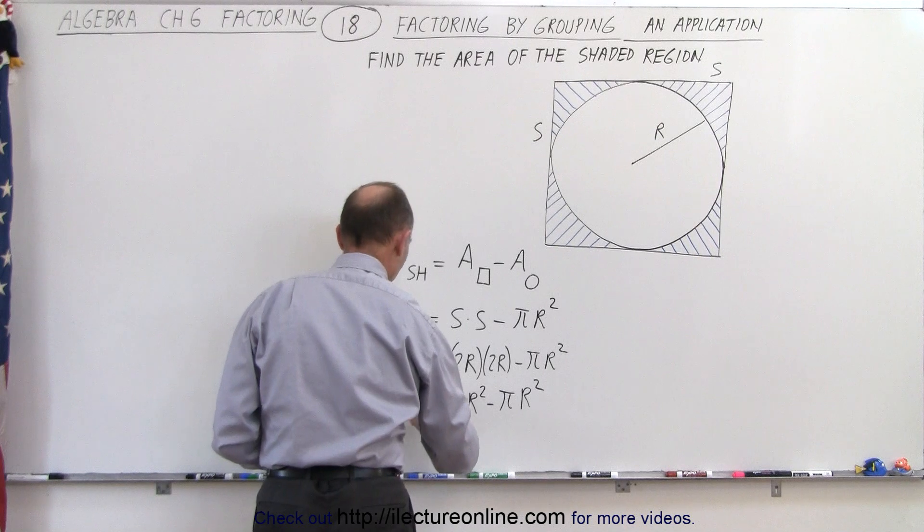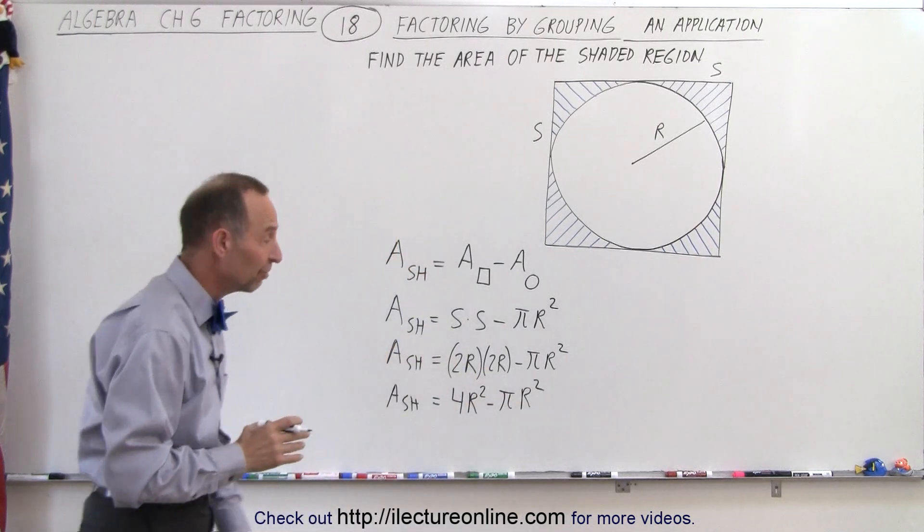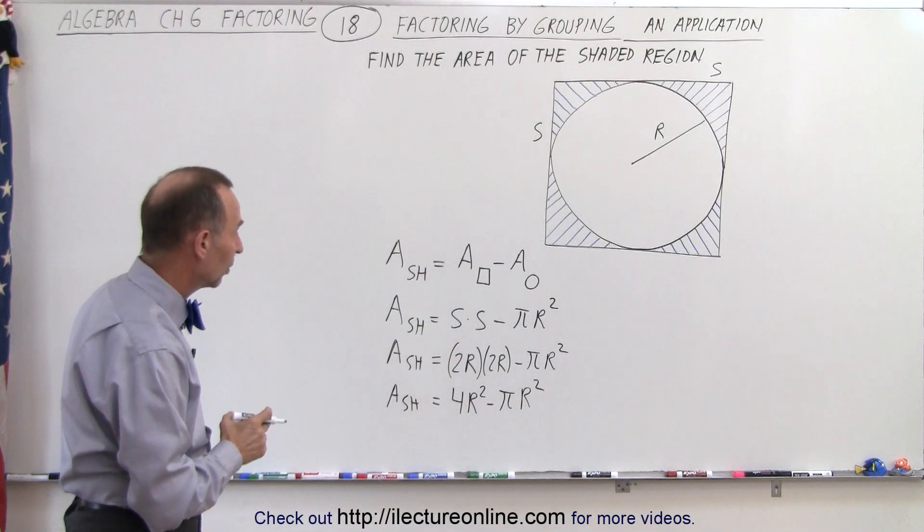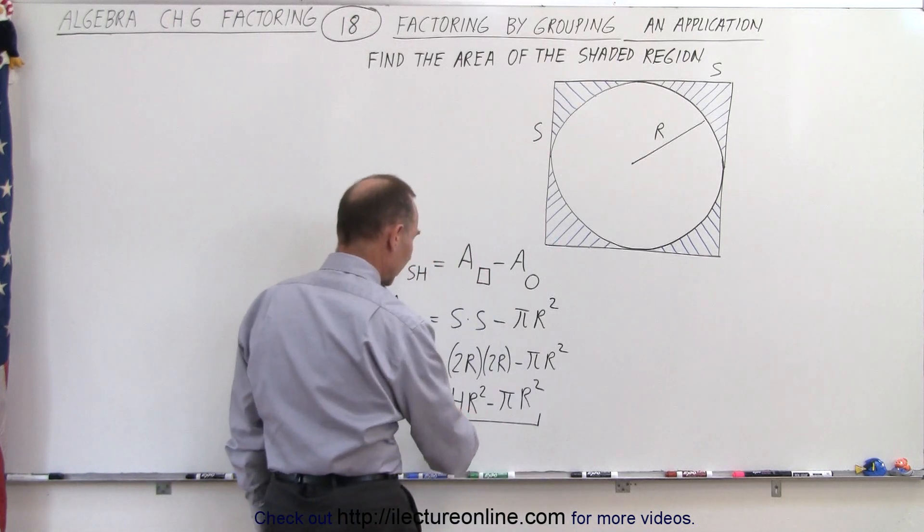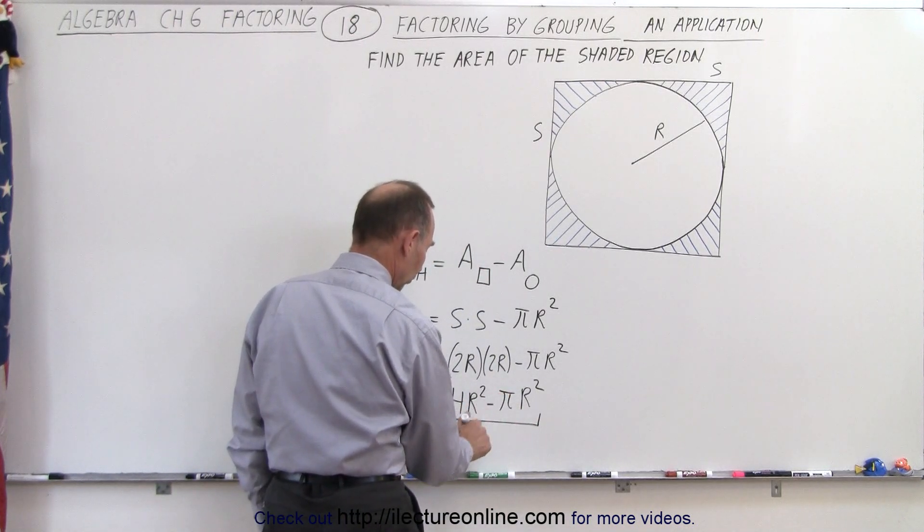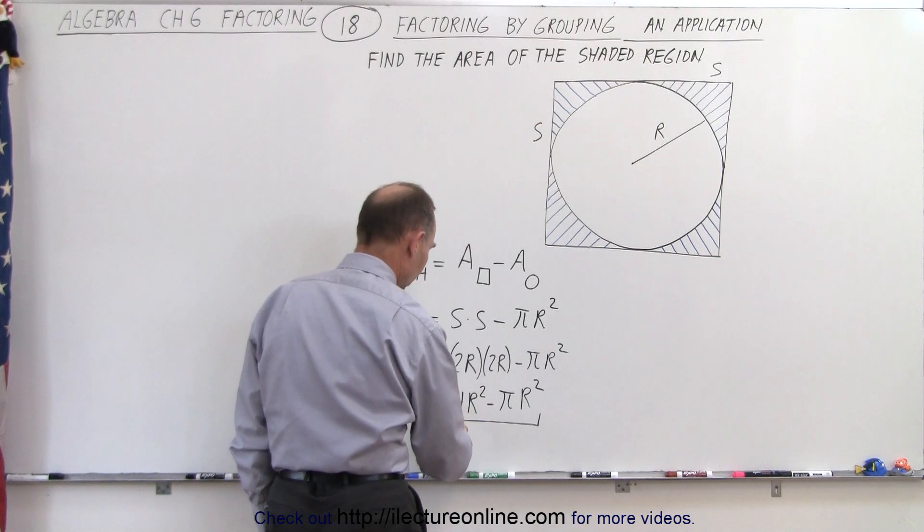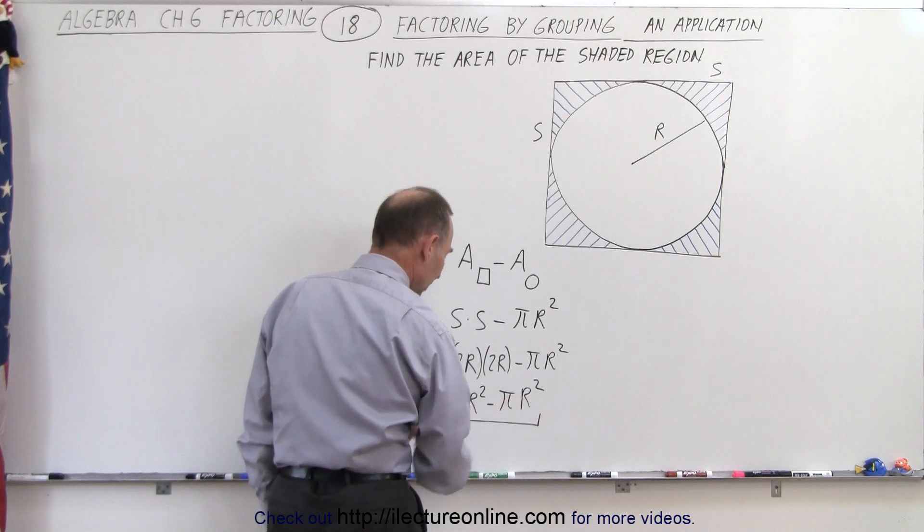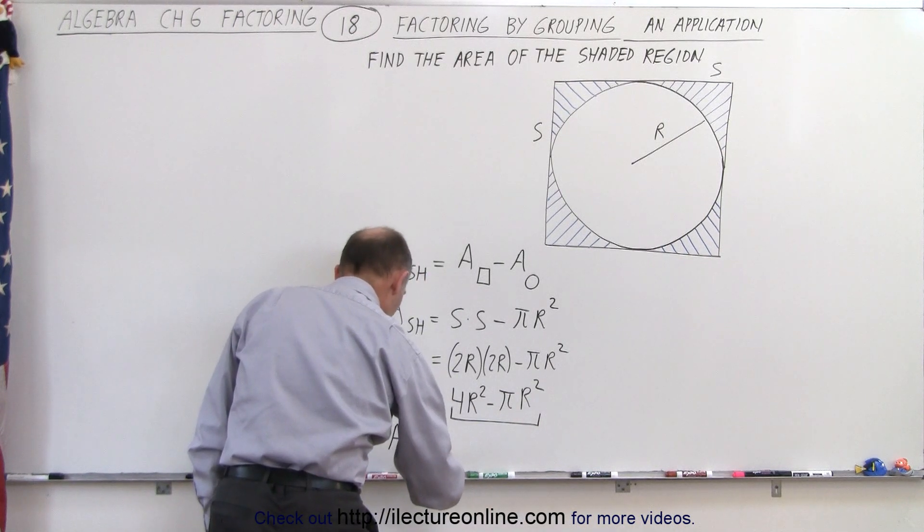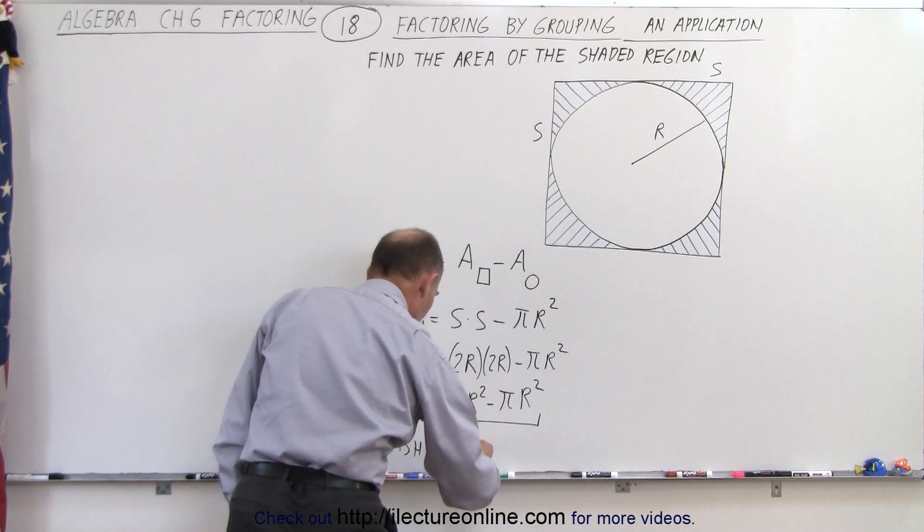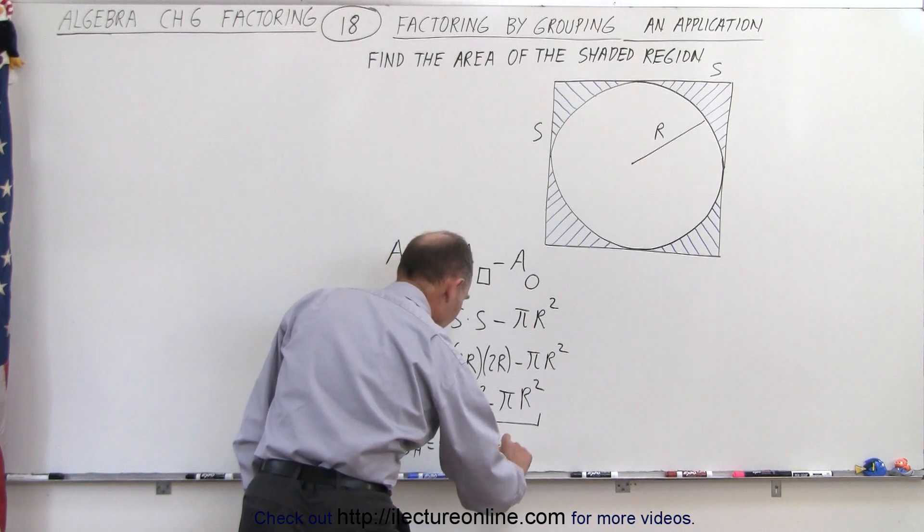And then you can see that we can actually factor out a common factor. In this case, we only have one group. Notice that in this group of two terms, it contains the variable R squared in both terms. So that means we can say the area of the shaded region is equal to R squared times 4 minus pi.